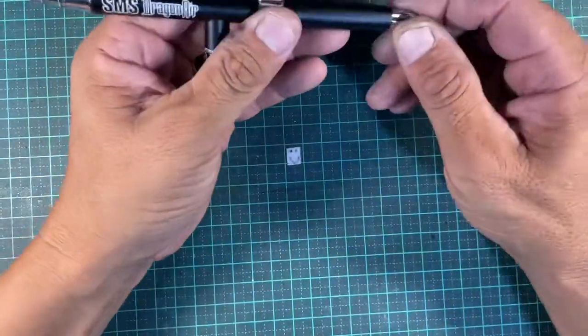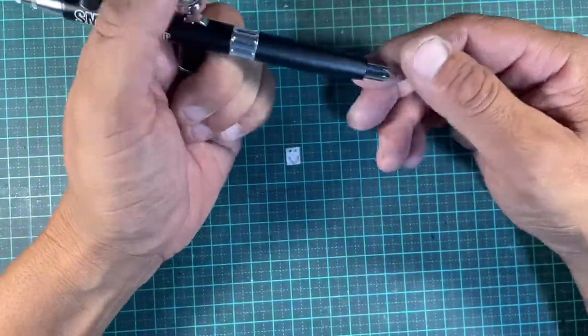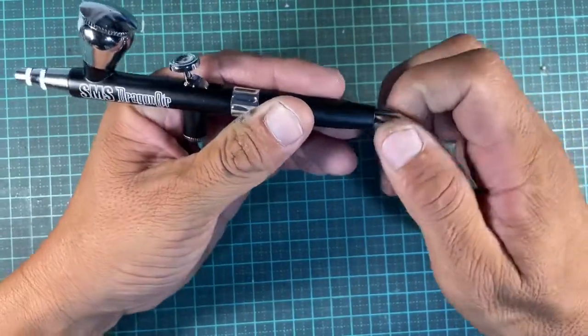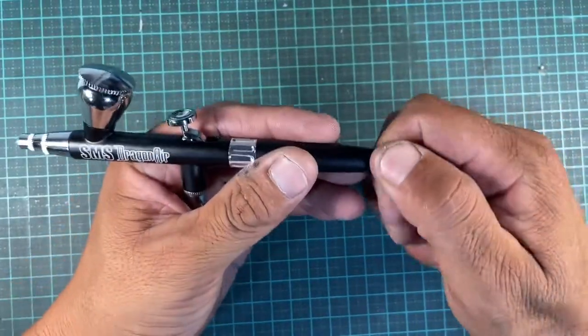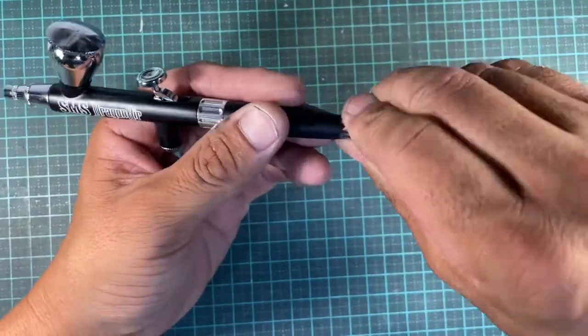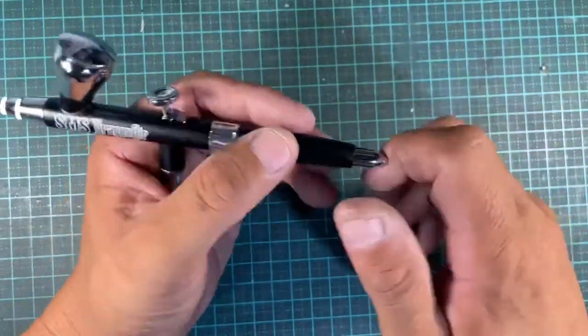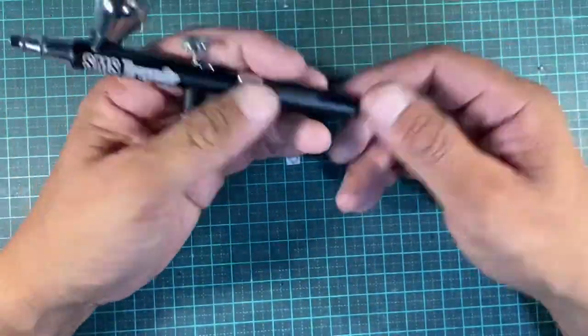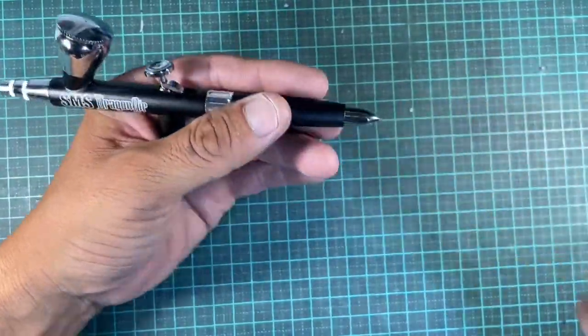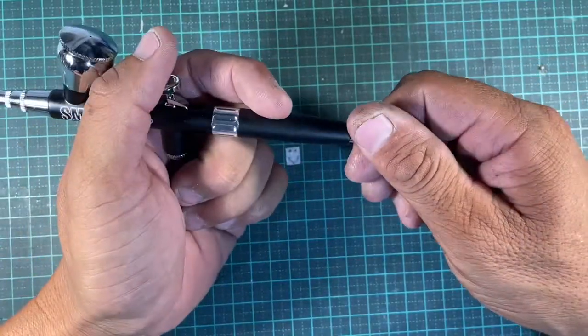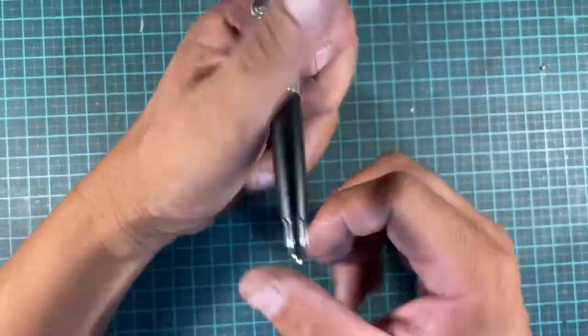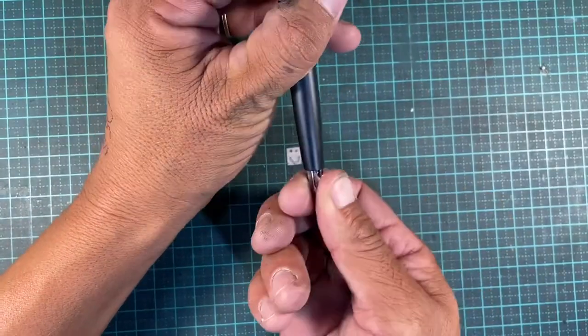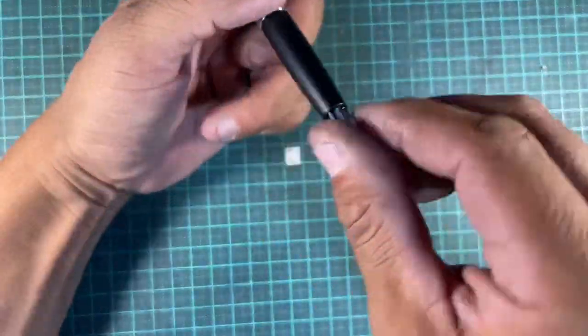There's a trigger or a needle adjuster on the back as well. So you tighten it up. Doesn't need to be too tight. Don't go stupid and put a pair of pliers on the back because you'll break it. So just be gentle. Treat it like any of your tools. Just look after it. Be gentle.